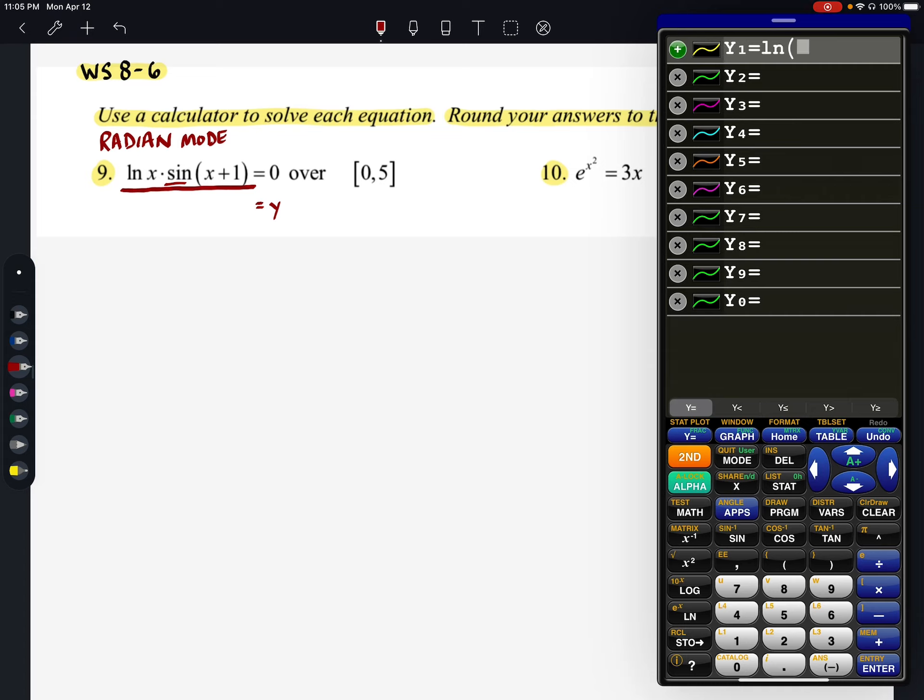I'm going to do the natural log of X, close my parentheses, times the sine of X plus one. Close my parentheses. OK, because it equals zero. Remember, we're going to be looking for where this function crosses the X axis. But we're only looking for answers in this interval from zero to five. So we're going to need to also set our window.